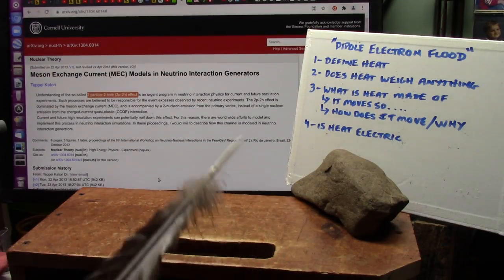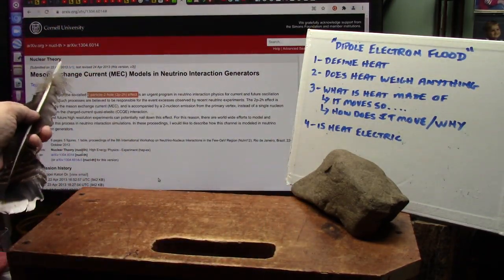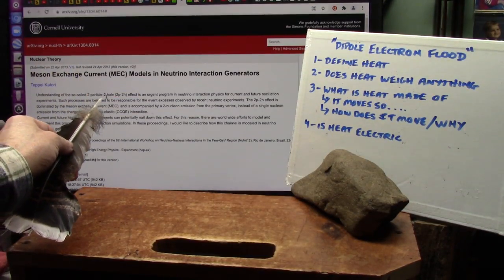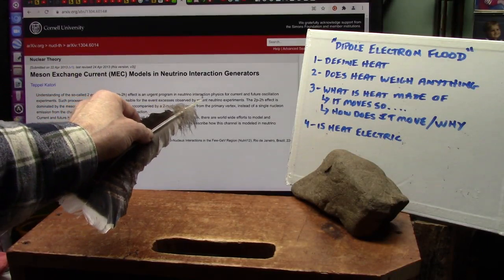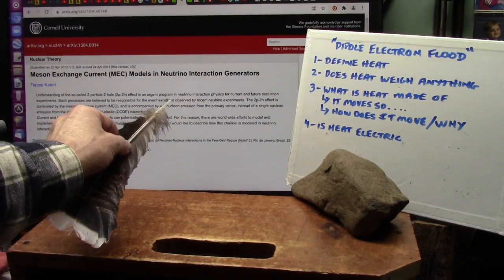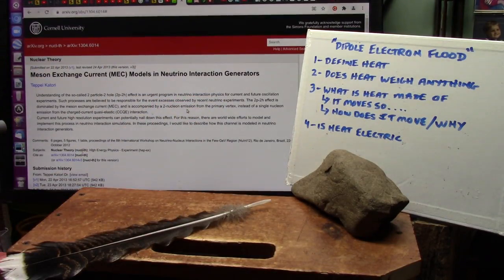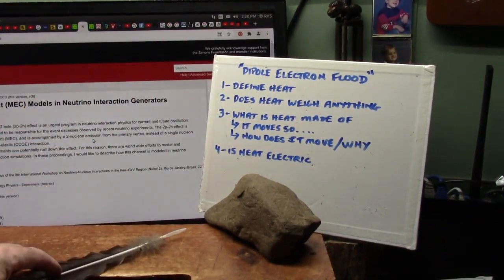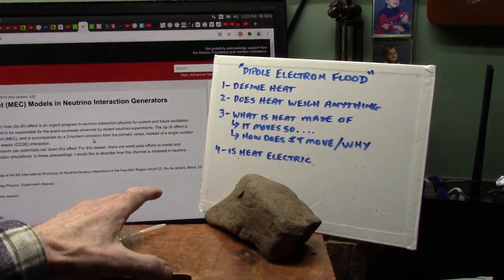Okay. Until they understand electron flood theory, they're never going to understand any of these things that they see. They just can't understand them. Now, this goes back to 2013. This is Cornell, and they talk about the particles I just showed you, the 2p2h particles, the two particle, two holes, the blacks and the whites. It's urgent program in neutrino interactions. Such processes are believed to be responsible for the event excesses observed, exactly what we did. And these were in experiments. They weren't just guesses. So what we need to do is start here. We need to get back to the beginning and really reevaluate literally everything that we've been taught about in science. I mean completely, to be perfectly honest with you. But let's just start with what matter is made out of.